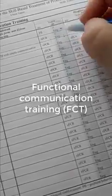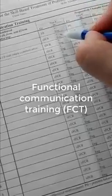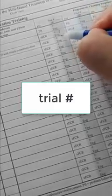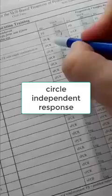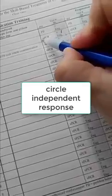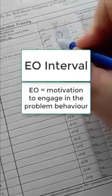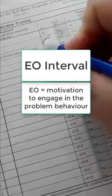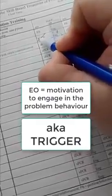Now this trial number refers to your trial number. So this is my first trial. I'm going to circle an independent response or slash a prompted response, which is what the first trial would be. And this is the EO part of your trial. So you're going to put your EO in place. It's time to stop. Say my way.